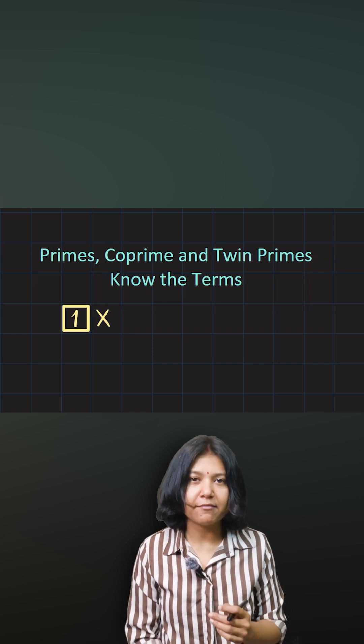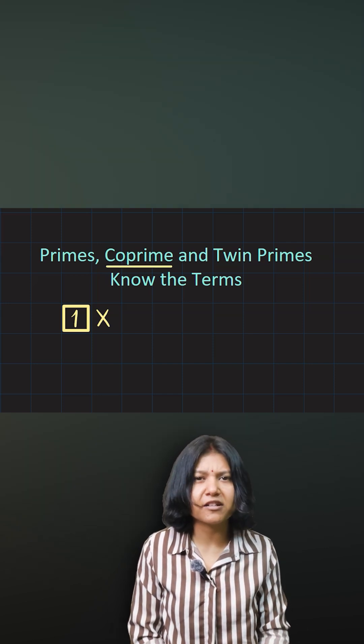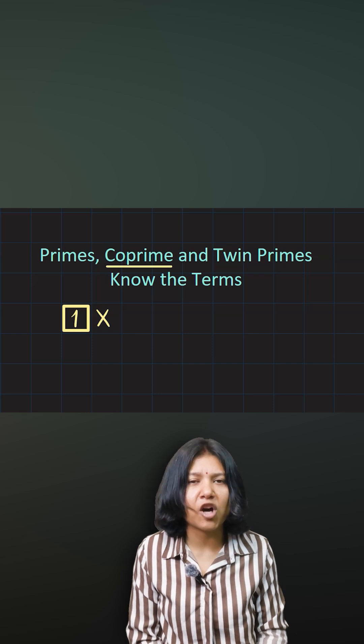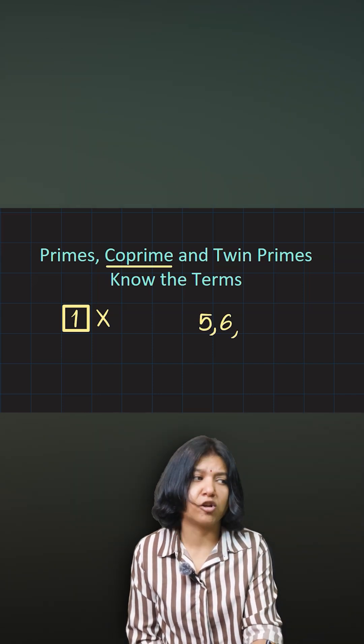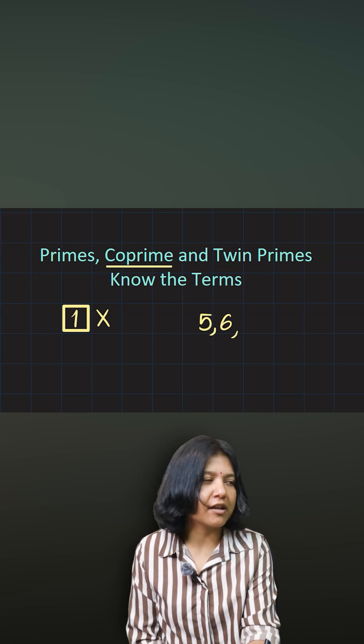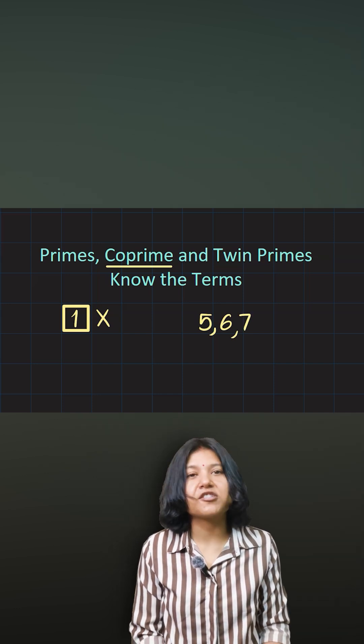Now there is a word called co-prime. The word co-prime is used to represent a pair of numbers or even a triplet of numbers that have nothing in common. Like if you take any two consecutive numbers, five, six, seven, or any two or three consecutive numbers, then their HCF is always one. So such numbers are always called co-primes.